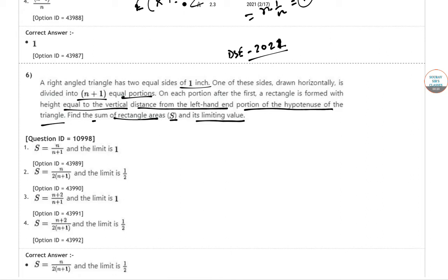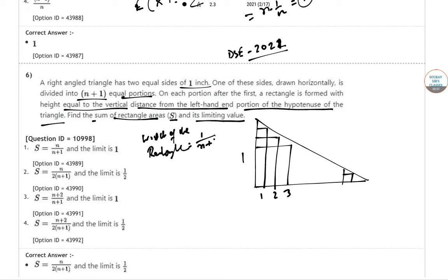So here one triangle is like this and one unit wise it is reducing and the same thing happening over here. So that's 1, 1, 2, 3 in that way going down. So width of the rectangle which is being formed is 1 by n plus 1.